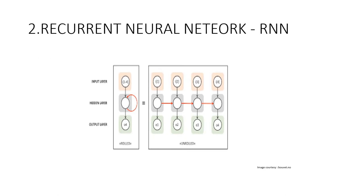Recurrent Neural Networks are models that try to mimic the operations of the human brain. RNNs pass each item in the sequence through a feedforward network and use the output of the model as the input to the next item in the sequence, allowing the information from previous steps to be stored. In each iteration, the model stores the previous words encountered in its memory and calculates the probability of the next word.